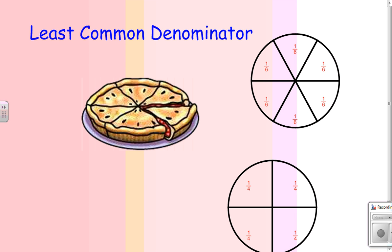You have a pie, and somebody comes up to you and says, would you rather have five-sixths of this pie or three-fourths of the pie? In order to get the most amount of pie possible, we have to know a little bit about least common denominator.